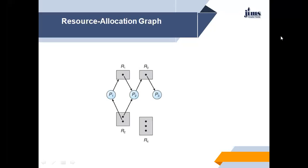To understand this concept, let us return to the resource allocation graph. Suppose process P3 requests an instance of resource type R2. Since no resource instance is currently available, the request edge from P3 to R2 is added to the graph. At this point, two minimal cycles exist in the system: P1 → R1 → P2 → R3 → P3 → R2 → P1, and P2 → R3 → P3 → R2 → P2.